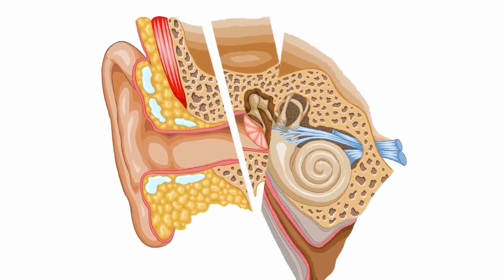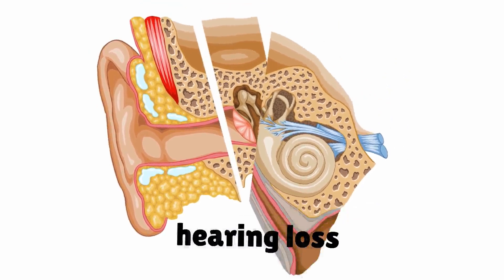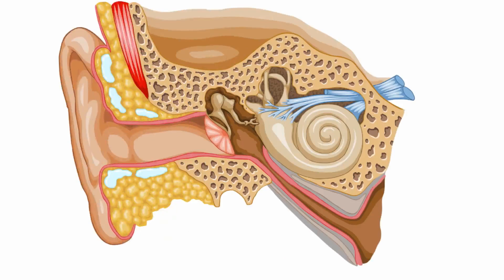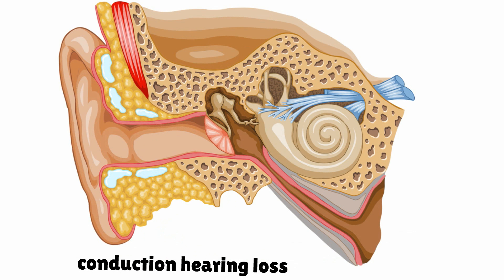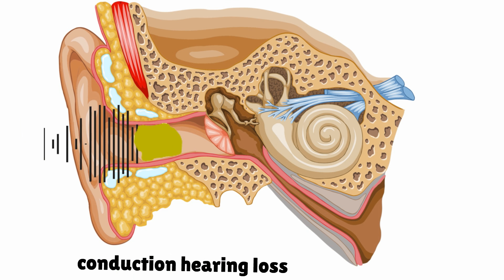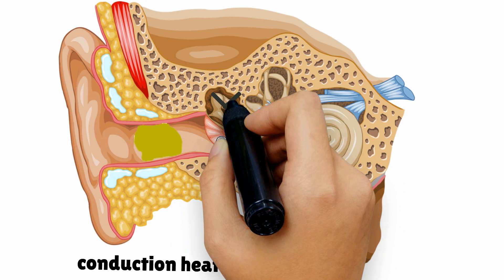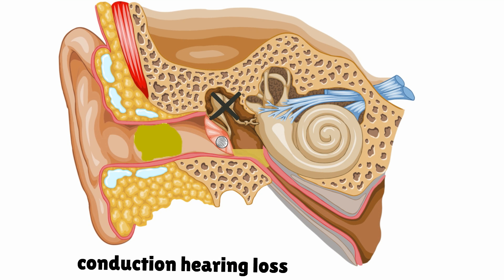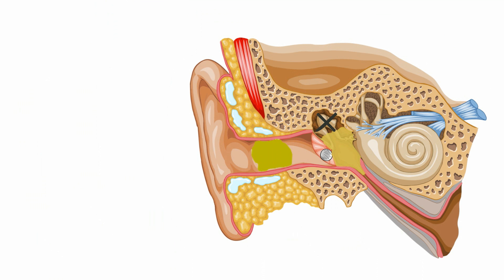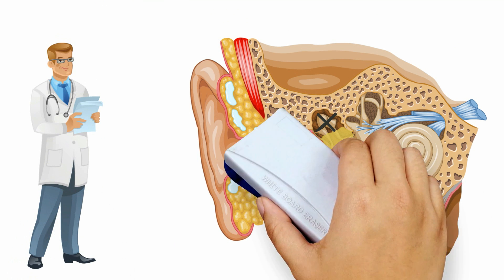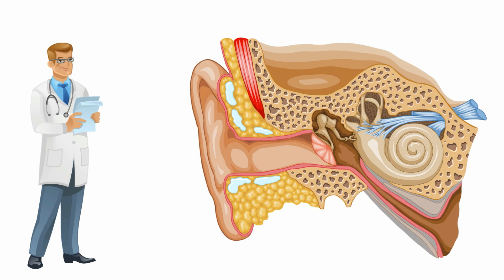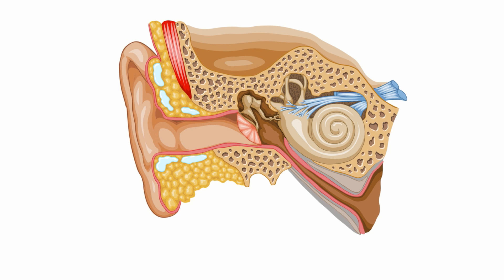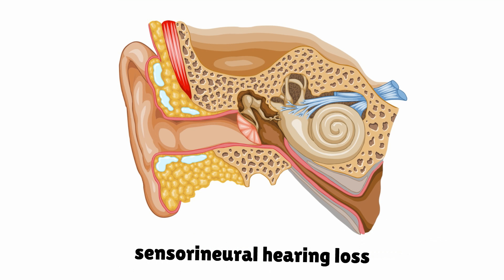We call this hearing loss, two types of which are conduction hearing loss and sensorineural hearing loss. Conduction hearing loss can be caused by an obstruction in the ear canal such as earwax, a perforated eardrum, a malfunction of the ossicles, otitis, or fluid in the middle ear. This type of loss can often be resolved by medical intervention and represents only 10% of cases of hearing loss.